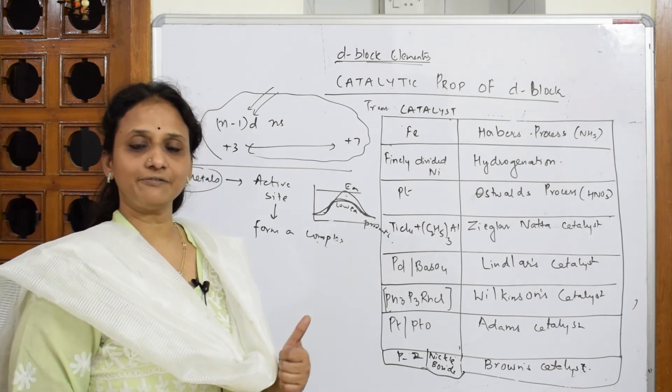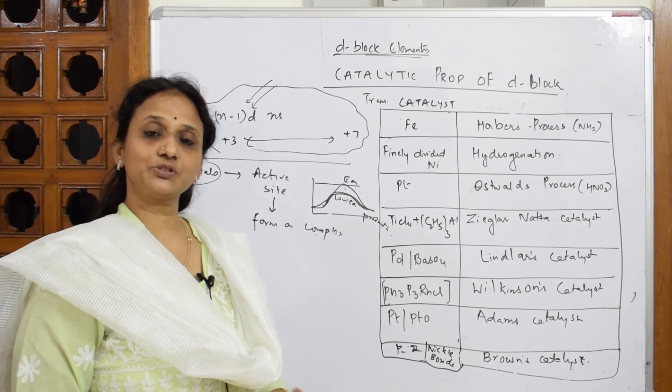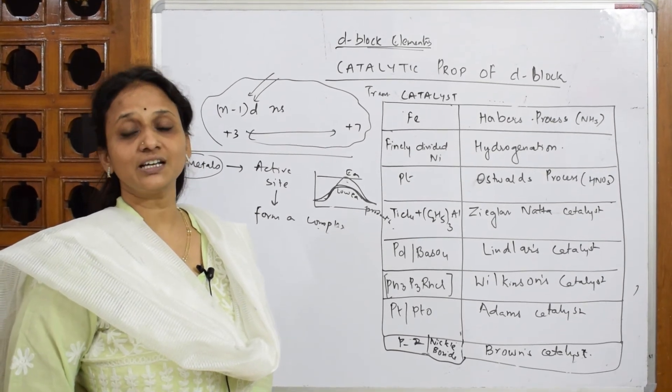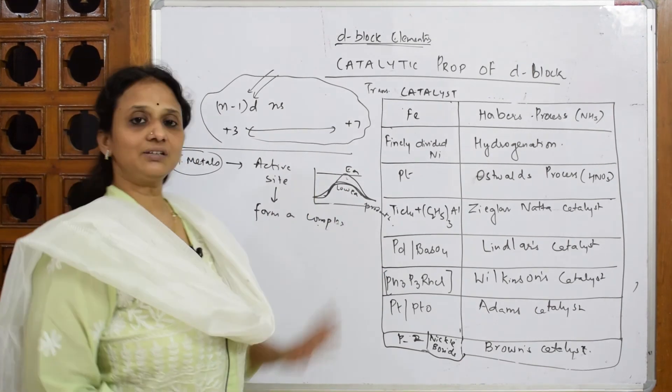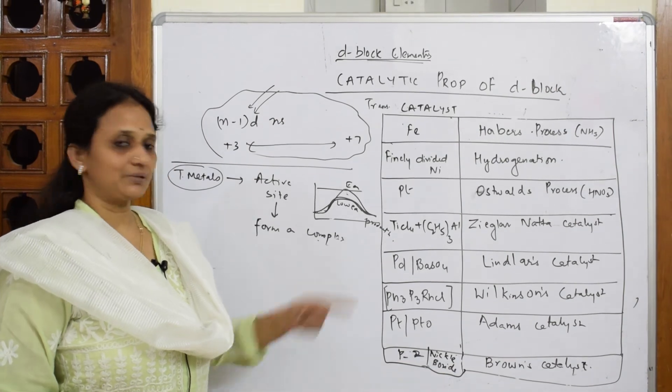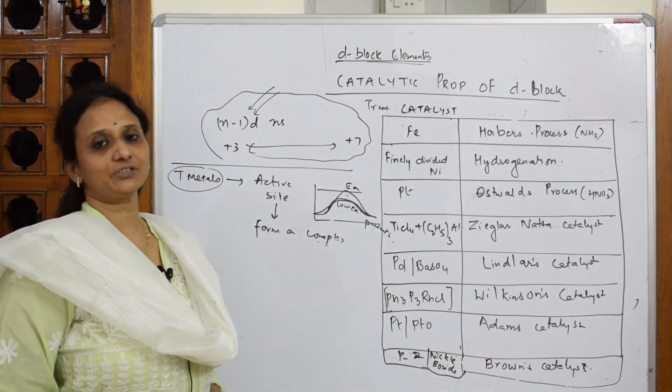Point number one, they have variable oxidation state. Point number two, they have active sites because of this variable oxidation state to which they are going to lower the activation energy. You can note all these things, catalysts and please memorize it for the exam.